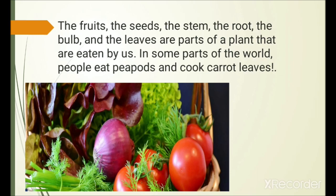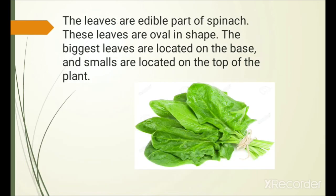Parts of a plant that are eaten by us. In some parts of the world, people eat pea pods and cook carrot leaves. The leaves are the edible part of spinach. Spinach leaves are oval in shape. The biggest leaves are located on the base, and the small ones are located on the top of the plant.